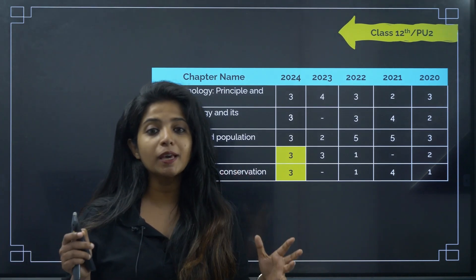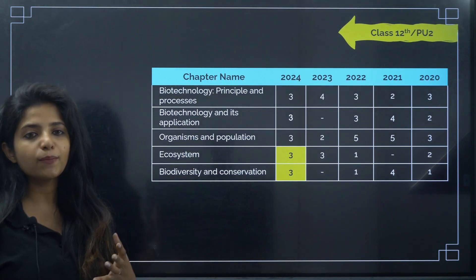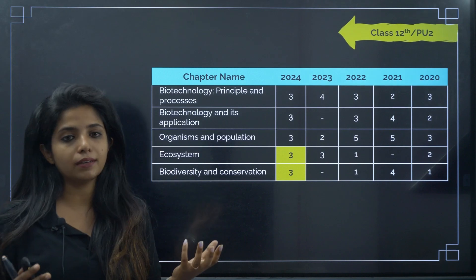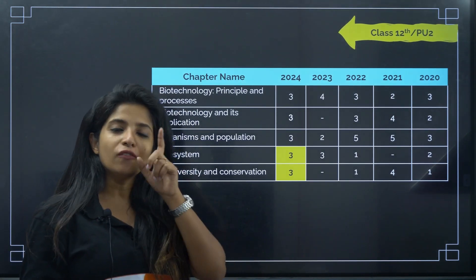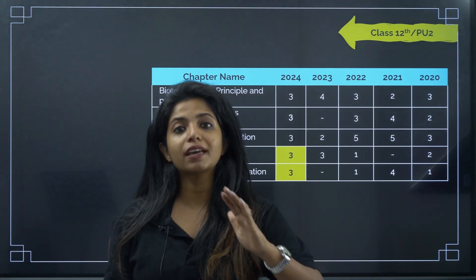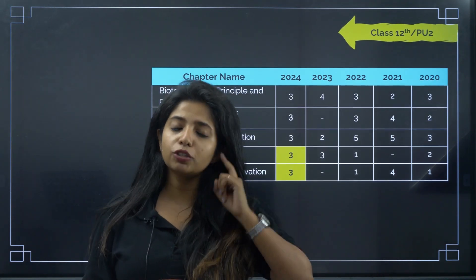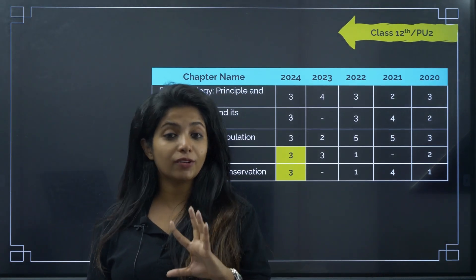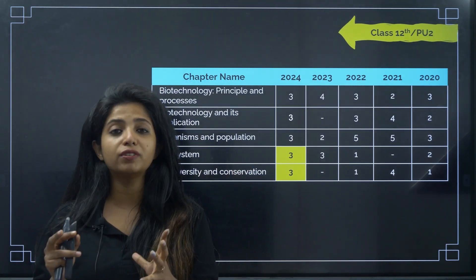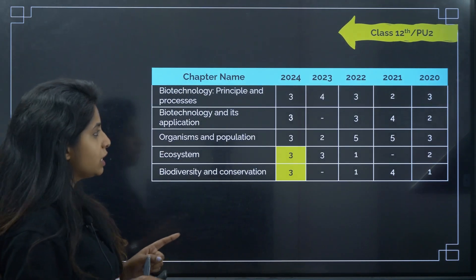This year biodiversity and conservation came back with 3 questions after having no questions the previous year — that's why I say don't ignore any chapter just because it's ranked low priority. What you should do is make a proper weekly study plan. I've made a video on the strategy plan for biology that you should definitely watch — it covers what to study each week, and if you follow it you'll score really well.